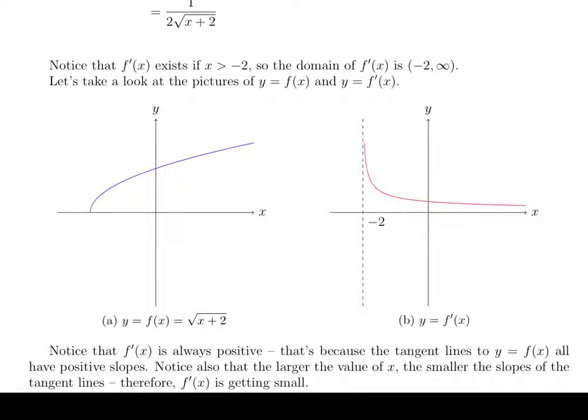And so that explains why the f prime of x, this function here, is getting smaller as we move out towards infinity. Also notice that if we were to draw a tangent line, say very close to negative 2, we'd have a very steep slope, something like this, and that's why the values of the derivative are getting very large over here.